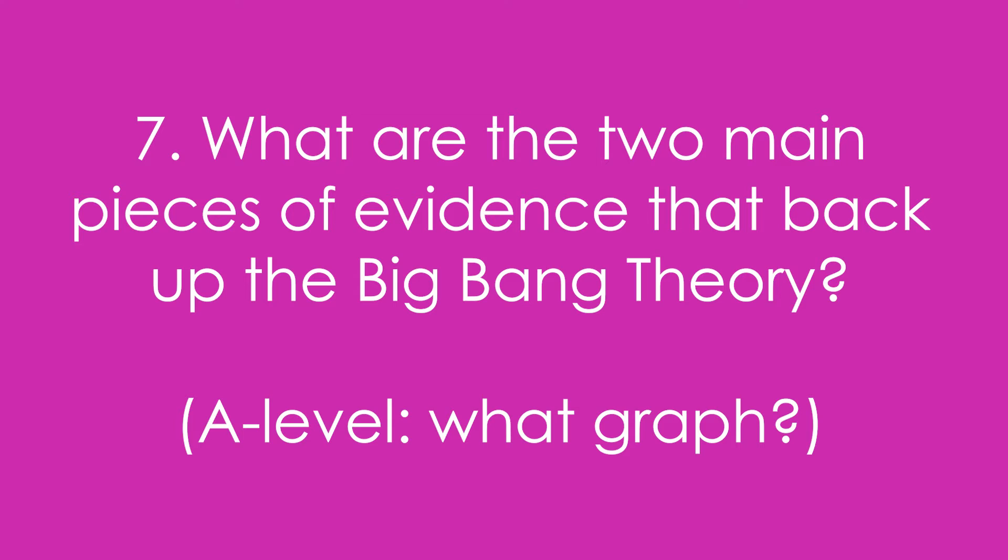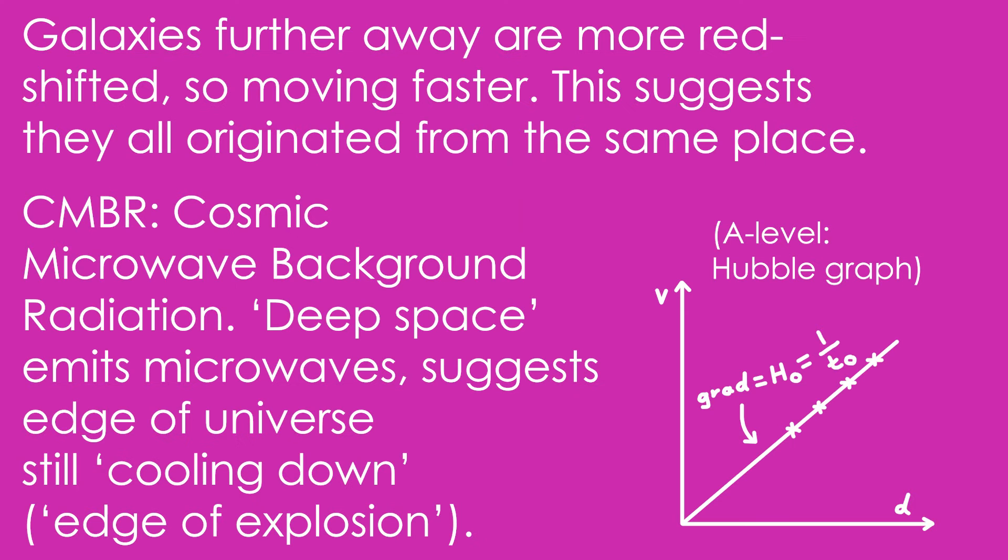Question 7: What are the two main pieces of evidence that back up the Big Bang Theory? A-level, what graph is relevant to this? So we have redshift first of all, but the important bit is that galaxies further away from us are more redshifted, so that means they're moving faster away from us. This suggested that they all originated from the same place, if we reverse time as it were.